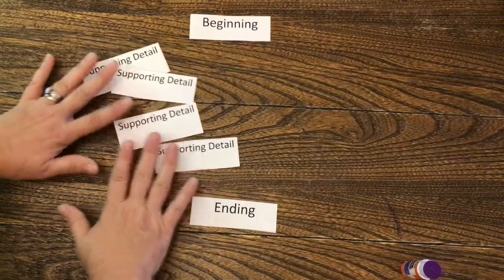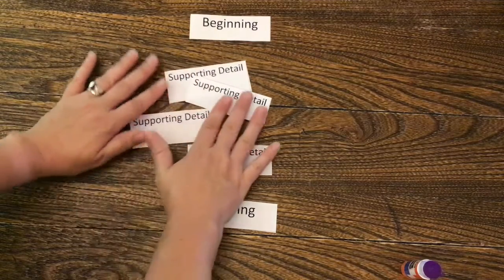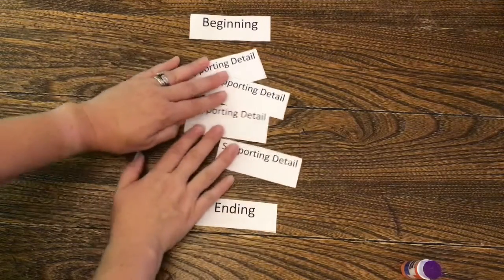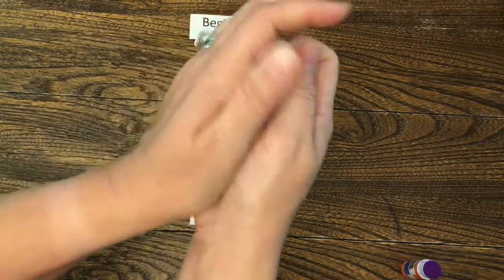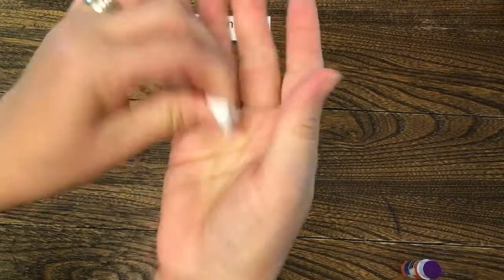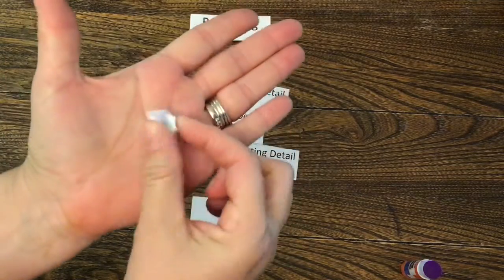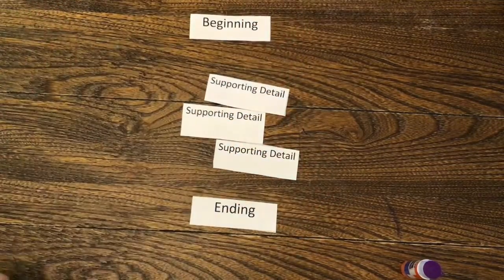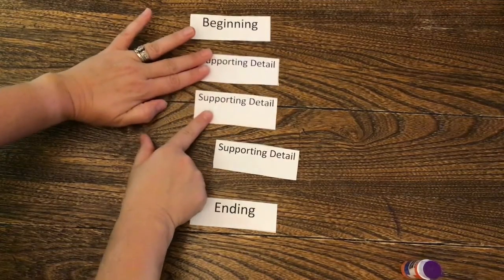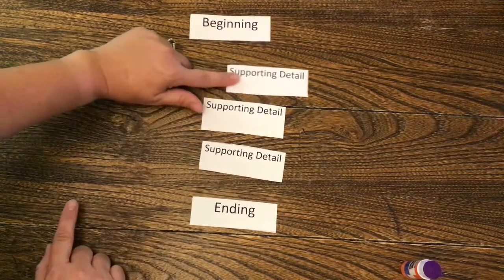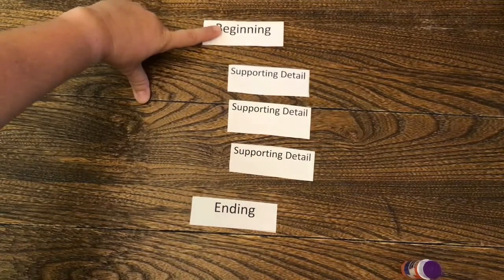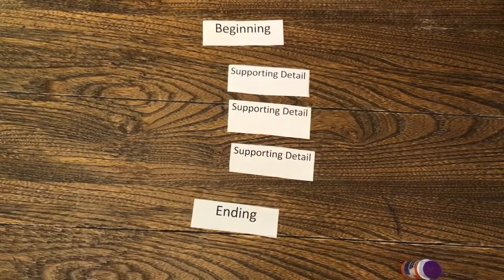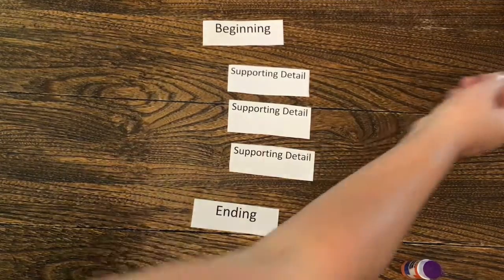Okay, so in the middle there's one part that messed up. Miss Kristen put four details, but we're only going to do three details. So you can take this one and crumble it up. All right, now throw it away. Okay, now we have three supporting details. One, two, three. Beginning on the top, ending on the bottom. Now we're going to glue them on.